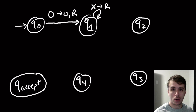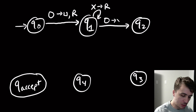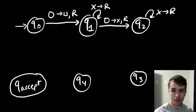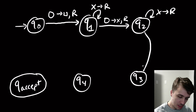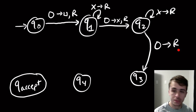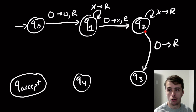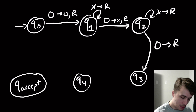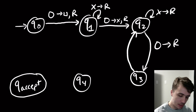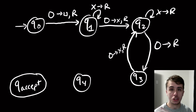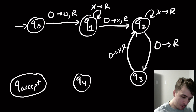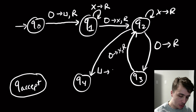What are some other transitions? We're going to have a transition for skipping over x's, and a transition coming down here where every time we see a zero from q2 we skip over it and go to q3. What does q3 do? It has a transition that converts a zero to an x whenever it sees one. From q2 we also have a transition to q4 which is blank goes to left.